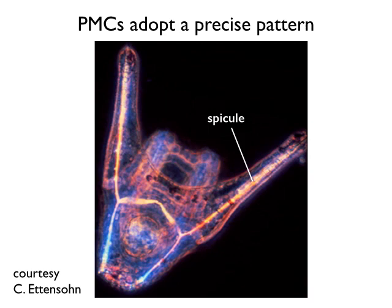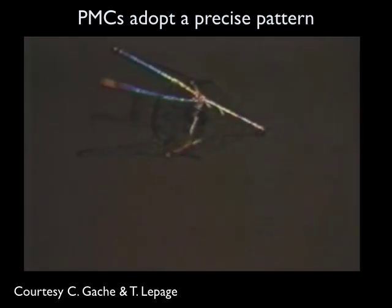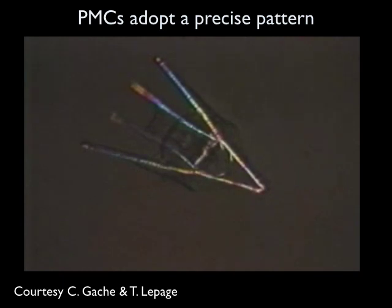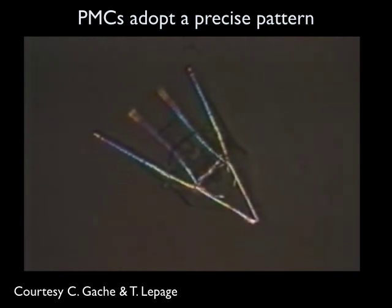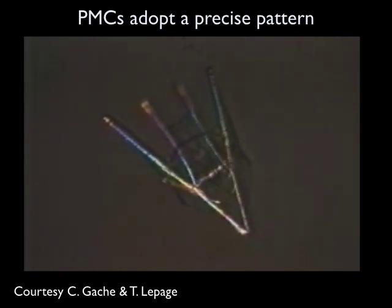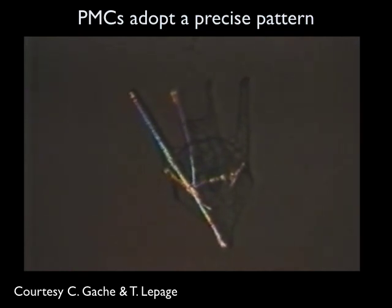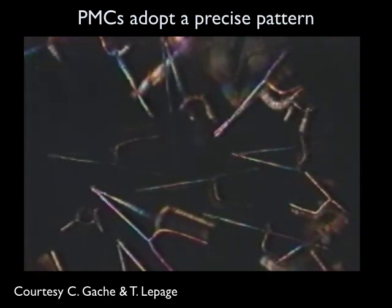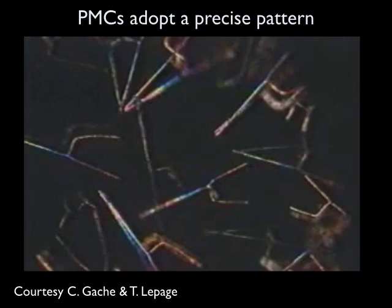If you look at a pluteus larva, the skeletal rods give it its spaceship structure. Here's a beautiful polarized light image of a pluteus showing these skeletal rods forming in a beautiful bilateral pattern. A movie shows some of these plutei viewed with polarized light microscopy swimming around — this is a Mediterranean species, Paracentrotus lividus, a movie from Christian Gache and Thierry Lepage from Nice. It's really beautiful and obvious — if you mess up something here, you're going to be able to see it. Here's a bunch of these plutei all swimming around together.